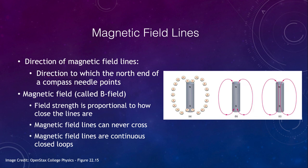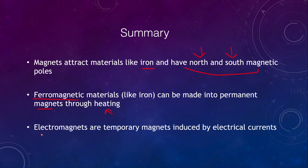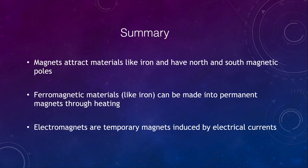To summarize: magnets attract materials like iron and have both north and south magnetic poles — always both, never just one. Ferromagnetic materials can be made into permanent magnets through heating, which aligns the domains and turns something like a piece of iron into a permanent magnet. Electromagnets are temporary magnets induced by electrical currents — a piece of iron with a wire wrapped around it can induce a very strong magnetic field. That concludes this lecture on magnetism. We'll be back next time for another topic in physical science — have a great day, everyone, and I will see you in class.